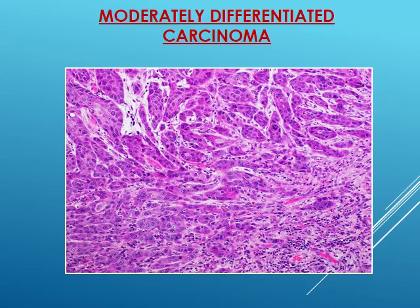In moderately differentiated carcinoma, there is not a complete loss of desmosomal junctions. The histopathological shape shows cell nests more than keratinization. Keratinization can still be found but it is a little less than in well-differentiated carcinoma.